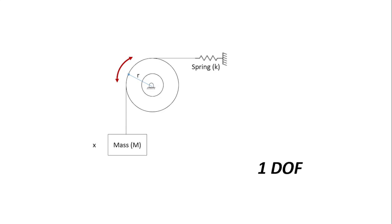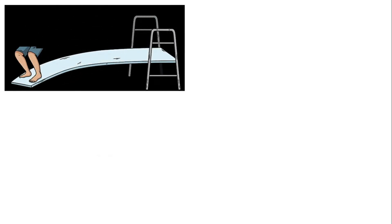If the pulley rotates in the anticlockwise direction the mass will move downwards. So if the pulley is rotating to and fro undergoing torsional vibration, the mass will be moving up and down undergoing longitudinal vibration. We can describe the position of the mass by linear dimension x and the pulley by angular dimension theta, and there is a relationship x = r*theta relating the linear to the angular dimension. If you know one you can determine the other, so this system has one degree of freedom.